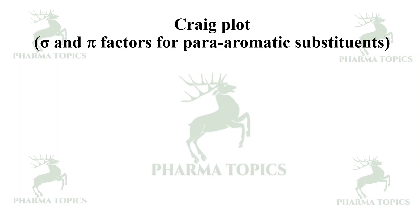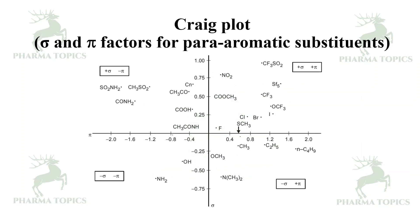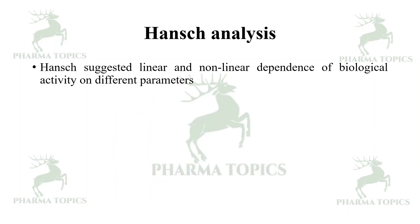The Craig plot provides a compilation of which functional groups could be selected based on sigma (σ) and pi (π) factors. The x-axis is sigma and the y-axis is pi, forming a four-quadrant plot. If you need a substituent with positive sigma and negative pi, you can identify suitable groups from the plot.